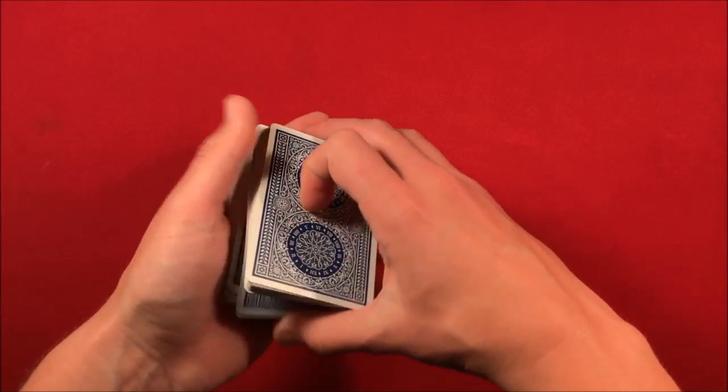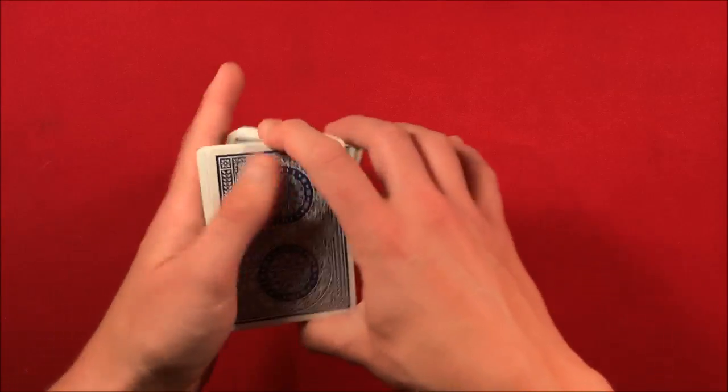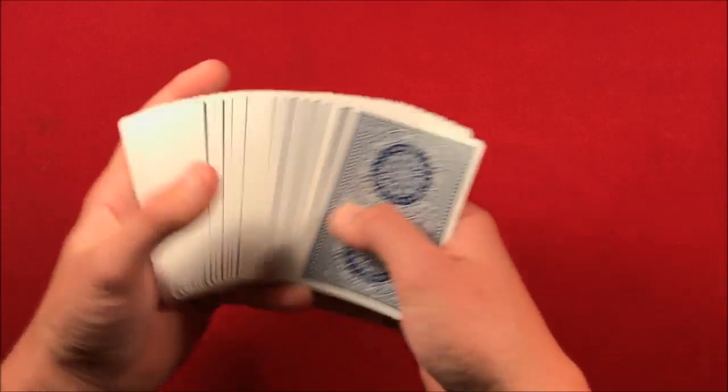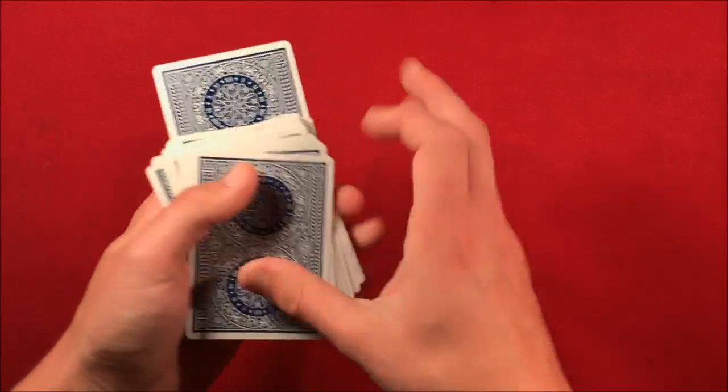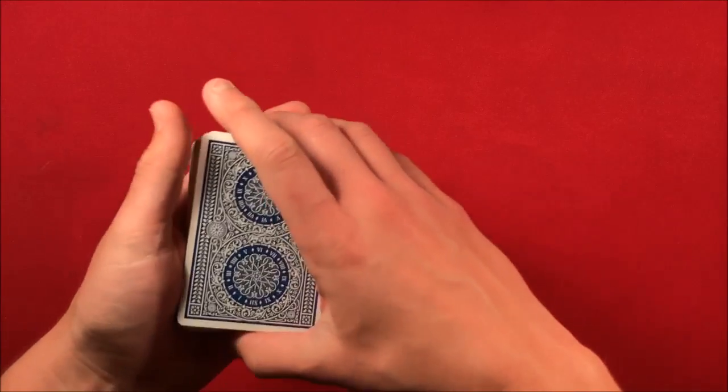It's going to be outjogged, and then from here you just do a standard double undercut to bring it back to the top. What I mean by putting the cards flush is you're not going to be shooting the card back into the deck where you can't necessarily grab it or get a pinky break or something.